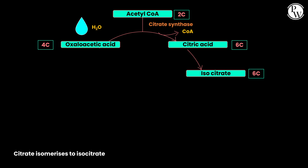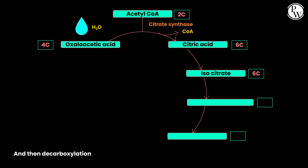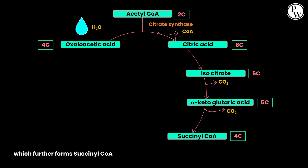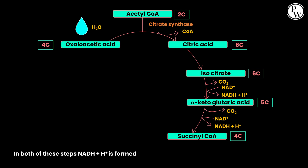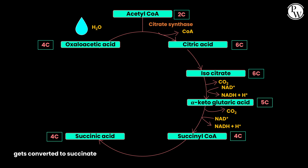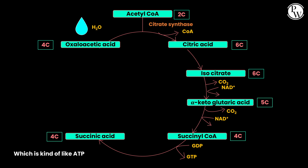Citrate isomerizes to isocitrate, and then decarboxylation happens twice, forming alpha-ketoglutarate, which further forms succinyl-CoA. In both of these steps, NADH + H+ is produced. Succinyl-CoA gets converted to succinate, synthesizing a GTP, which is kind of like ATP.